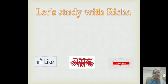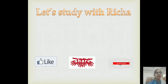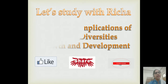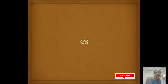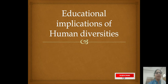Let's start with the concept — the topic of growth and development. Units 1 and 2 have mostly been covered; Unit 3 will start now. This is educational implications of human diversity. The human diversity concept, its meaning and causes, I have already covered in a previous video. Let's start with educational implications of human diversity.